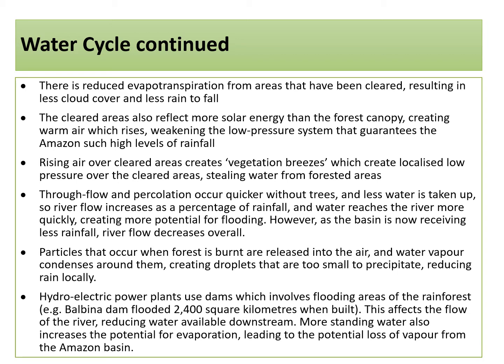Particulates that are created when forest is burnt using slash and burn techniques — a common method to clear areas so cattle can be kept there — cause water vapour to condense around them, creating droplets that are too small to precipitate, reducing rain locally. Hydroelectric power plants use dams which involve flooding areas of the rainforest, such as the Balbina dam which flooded 2,400 square kilometres when built. This affects the flow of the river, reducing water available downstream. More standing water also increases the potential for evaporation, leading to the potential loss of water vapour from the Amazon basin.